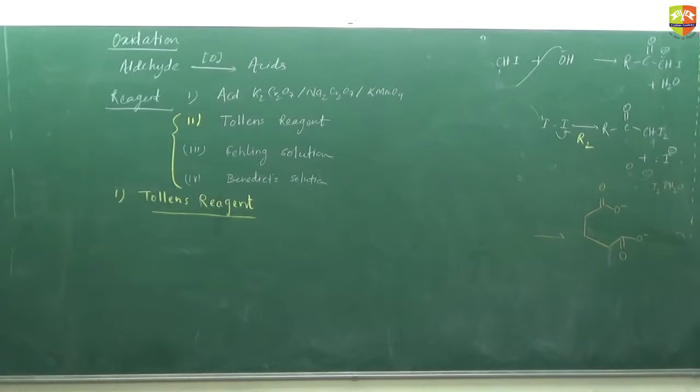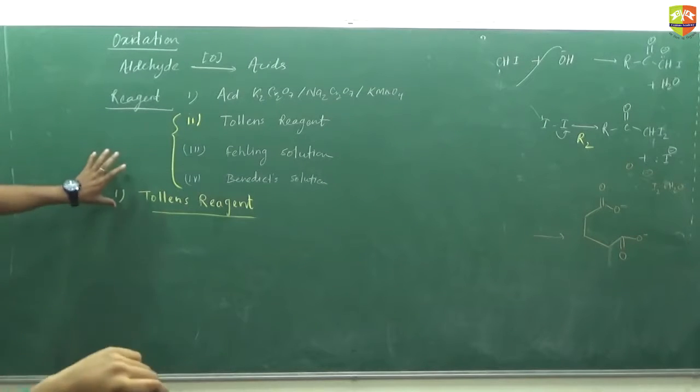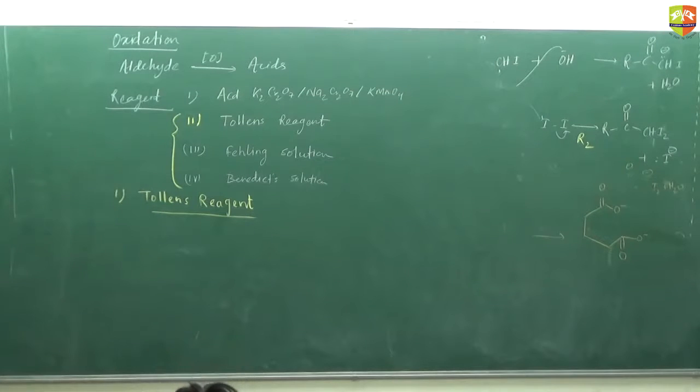Tollens reagent is the ammoniacal solution of silver nitrate. It is a mild oxidizing agent that oxidizes aldehyde to carboxylate ion.